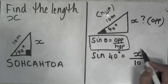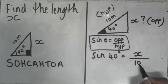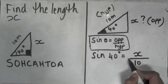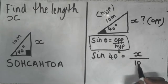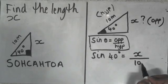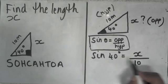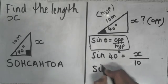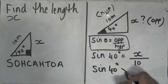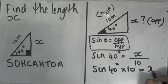My job is to work out what x is, so I need to take the 10 to the other side. Here I've got divide by 10, so if I take the divide by 10 to the other side, it becomes multiplied by 10. So I'm going to have sine 40 times 10 is equal to x.